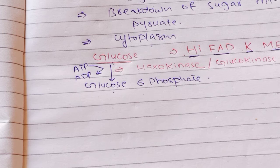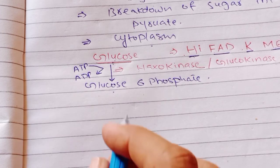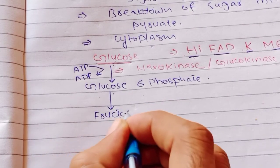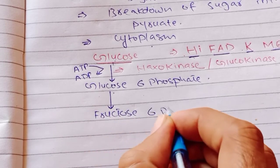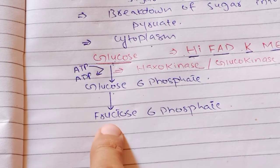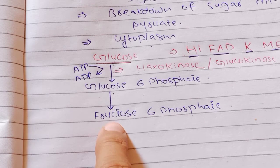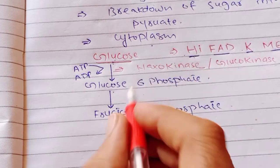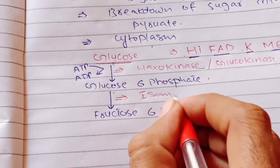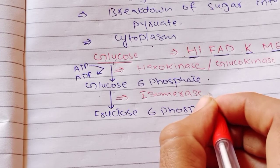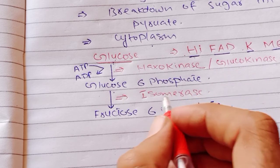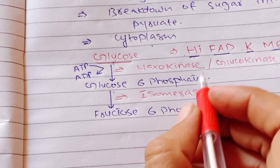The next step: glucose-6-phosphate will be converted into fructose-6-phosphate. This step is catalyzed by the enzyme starting with I — that means Isomerase, also called phosphohexoisomerase. You just have to remember isomerase.